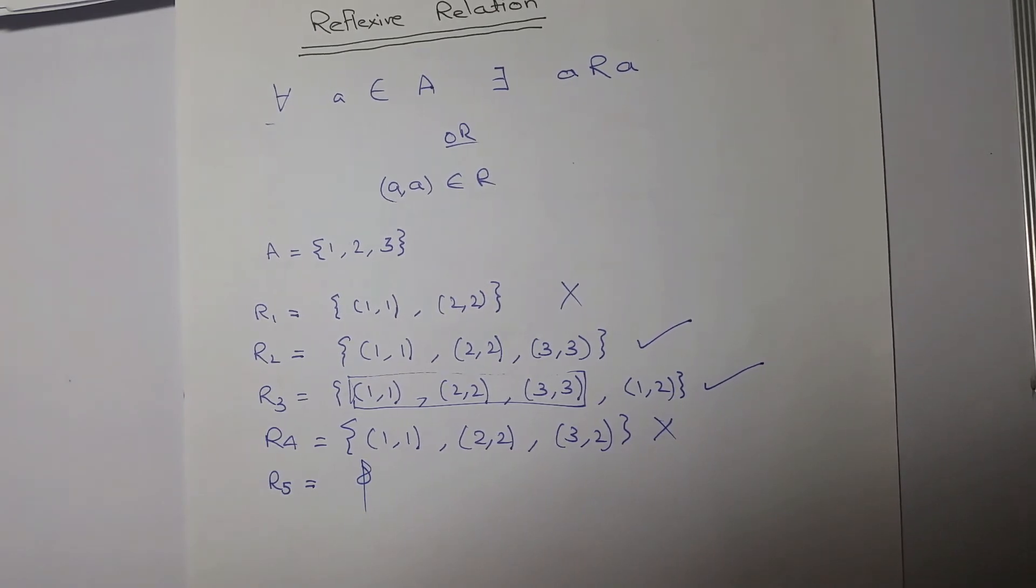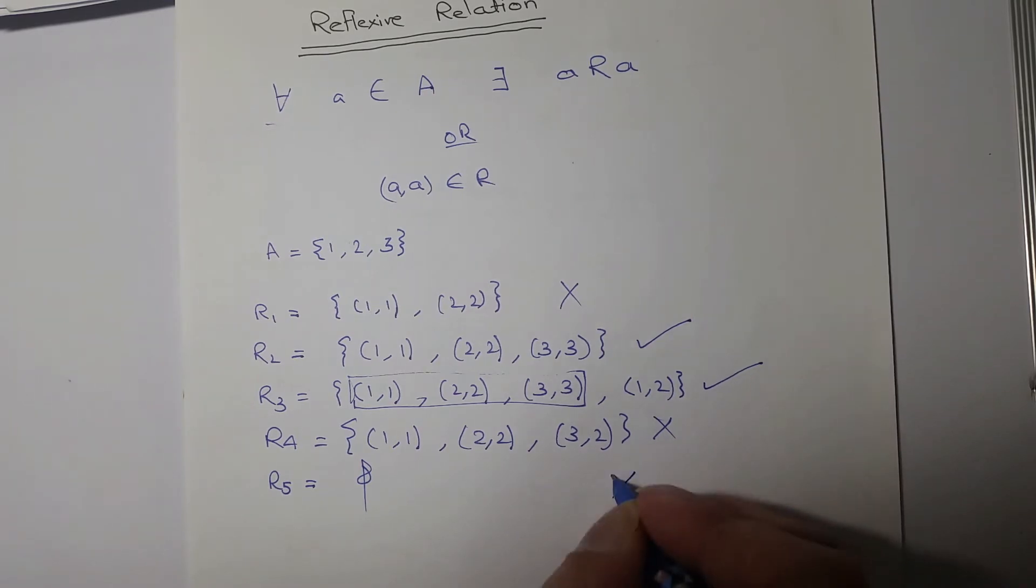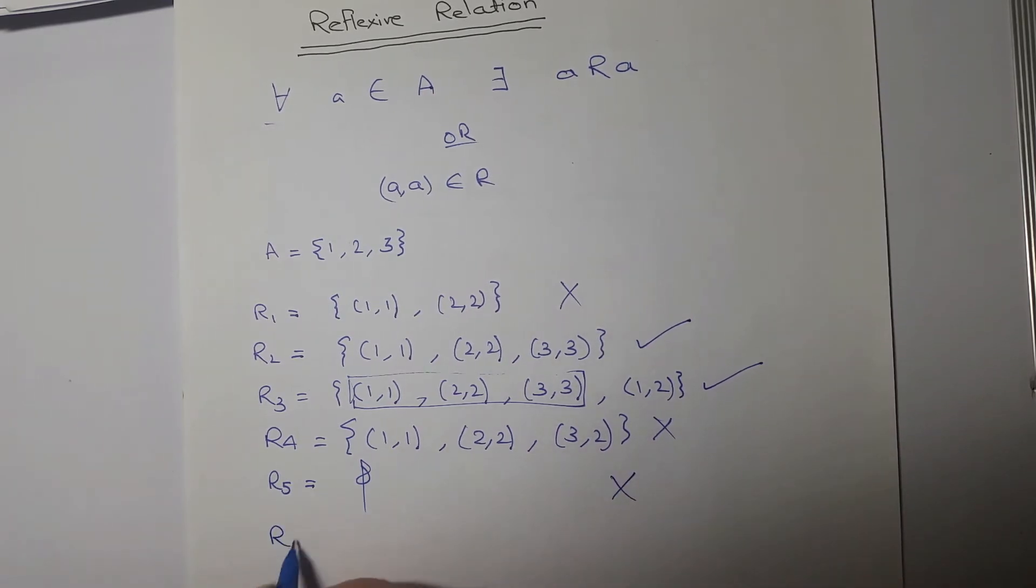And R6 is A Cartesian product with A, which is the Cartesian product of A with A.